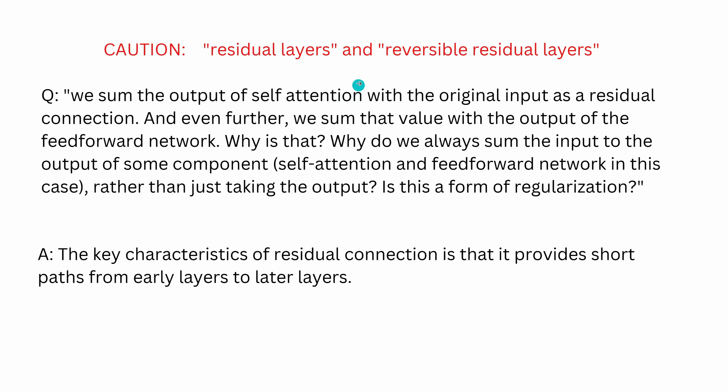So I want to show you here a question, a question from a real professional who asked in 2020, 'I don't get it. We sum out the output of the self-attention with the original input as a residual connection. And even further, we sum that value with the output of the feedforward network. But why is that? Why do we always sum the input to the sum, the input to the output of some component, like here for self-attention and feedforward network in this case, rather than just taking the output? Is this a form of regularization?' Question. And I love this because it shows you that even real experts in this field have questions.